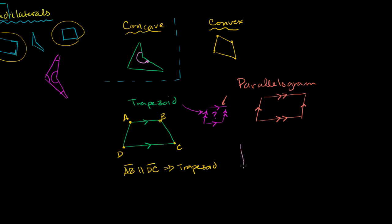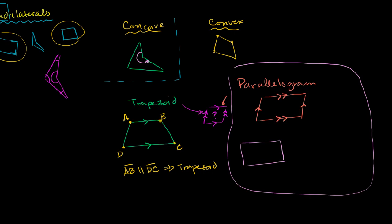In a rectangle, opposite sides are parallel and all four angles are 90 degrees. We've proven in previous videos how to figure out the sum of interior angles of any polygon, and using that same method you can show that the sum of the interior angles of any quadrilateral is 360 degrees. This is also a special case of that. So this right over here we would call a rectangle.